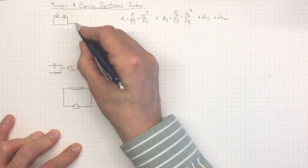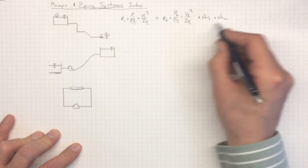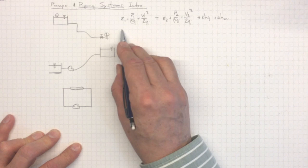Things like valves and fittings and so on, entrance losses, exit losses. And that's how we'll do our calculations for our piping system.